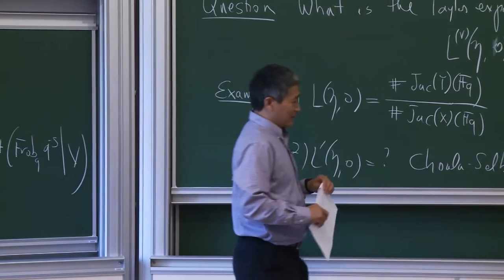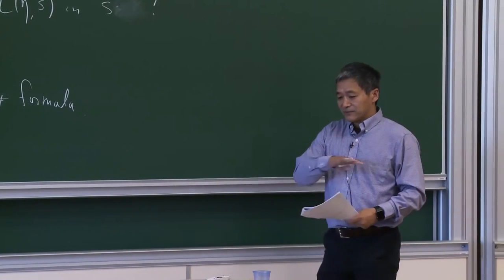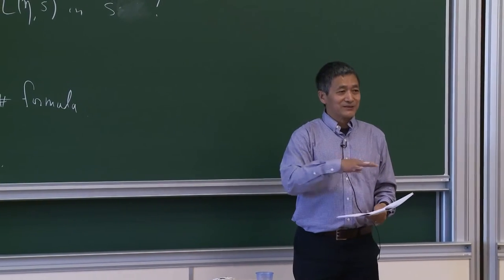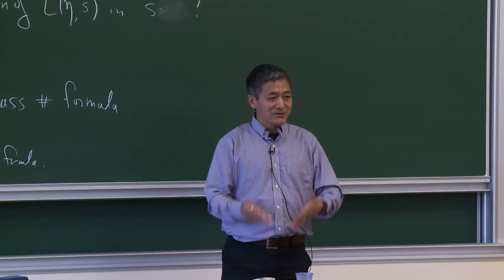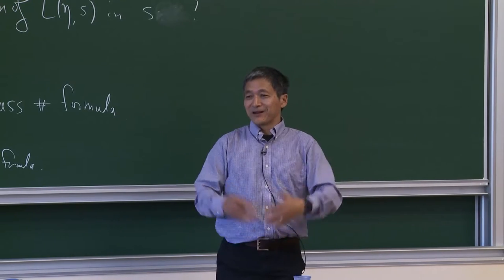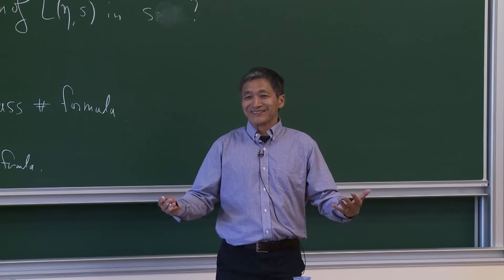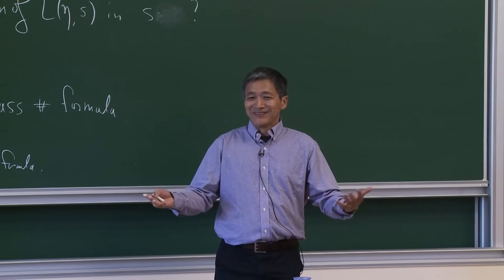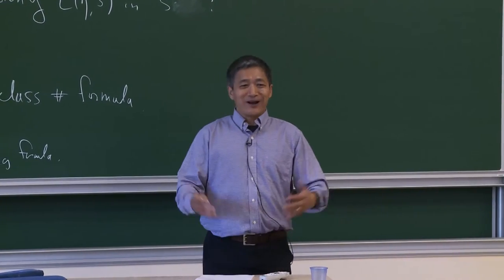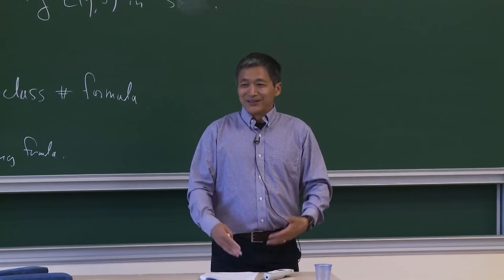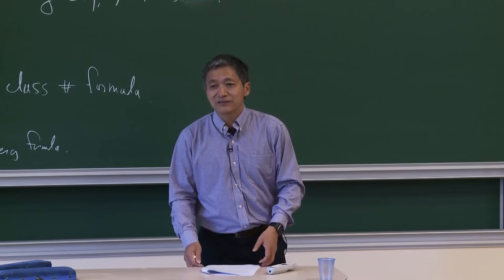As I said last time, everything should be a special case of the higher Gross-Zagier formula. This higher Gross-Zagier formula relies on the construction of a modular space over a base of dimension r — that's a new concept introduced in their paper. The classical arithmetic has base dimension 1; if you want the r-th derivative, you need to introduce more — you need a higher-dimensional base. That's a very interesting phenomenon.